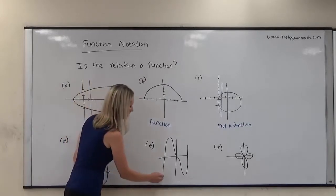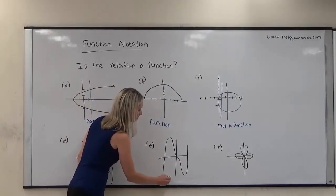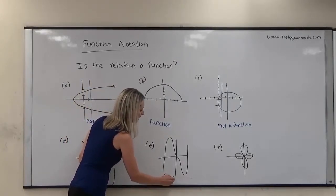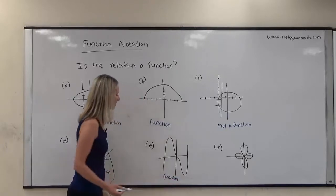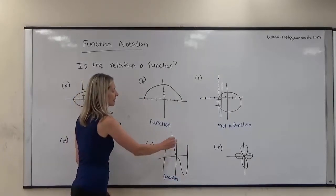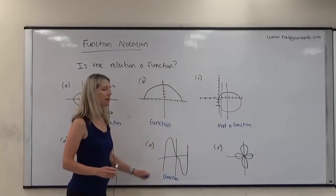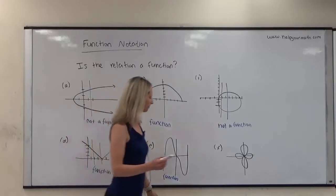In fact, we assume it's a polynomial function, but that doesn't matter. What matters is that this does pass the vertical line test. Anywhere I draw a vertical line it's going to hit the graph exactly once, so it is a function.